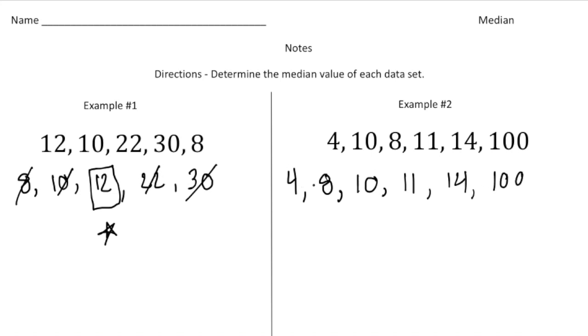Now notice this time we have six numbers. So the middle of that is actually going to be right here. And right there is not a number. So what you do again is you work yourself to the middle. So I cross off the four and the 100 and then the eight and then the 14 also, but now we're left with these two. And what you do is you have to find the average or the mean of those two numbers. So I'm going to go with 10 plus 11 and then divide it by two to get the average. So that's going to be 21 divided by two. So our middle number is going to be 10.5 and that's going to be the median value.